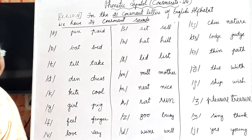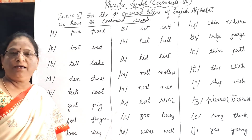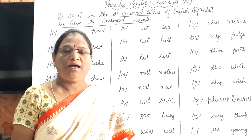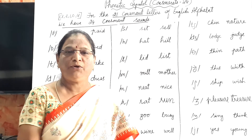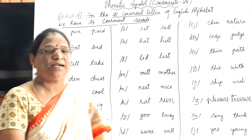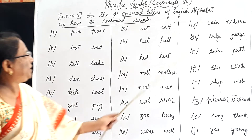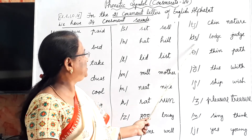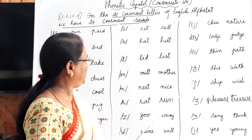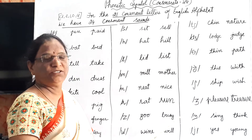We Indians pronounce R by flattening our tongue — it is not /ra/ that way. We have to curl our tongue: /r/. That is the correct /r/ sound. Next: /j/, /v/, /tʃ/, /dʒ/, /t/, /d/, /ʃ/.